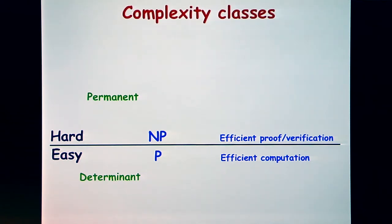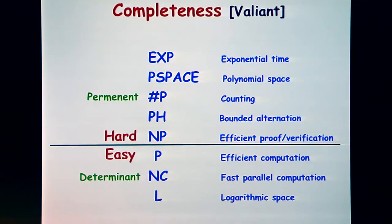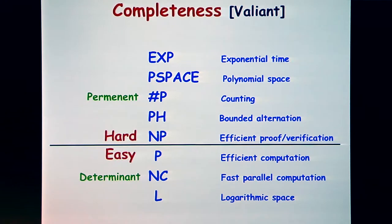More precisely, below P there is what can be done in very small space. The class of problems with efficient parallel algorithms sits slightly above that, and the determinant is complete for that class — so it's much easier than a typical problem in P. On the other hand, the permanent is complete for a class called #P, which is a counting version of NP problems, so it's quite a bit higher.